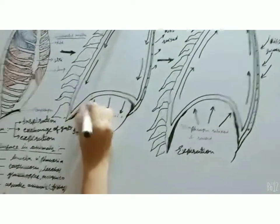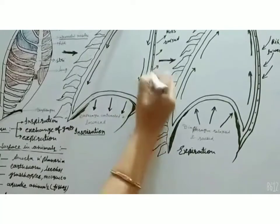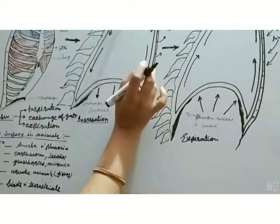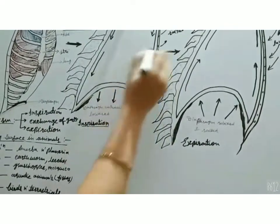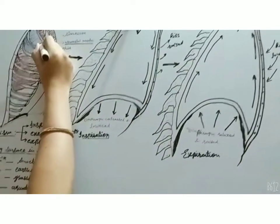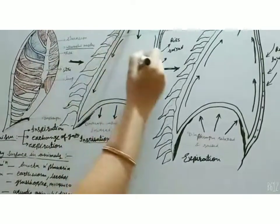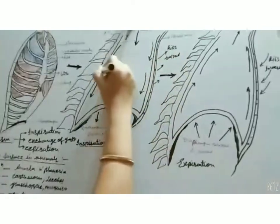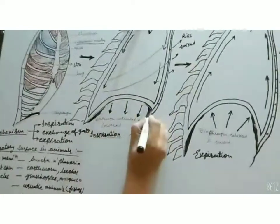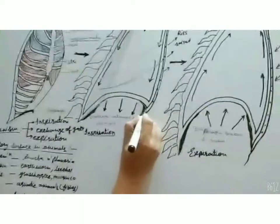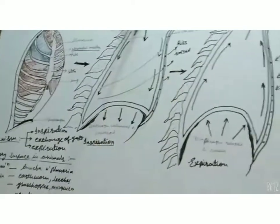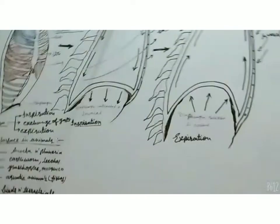The diaphragm is the flat structure below the rib cage, and these are the ribs. When inspiration — intake of oxygen — occurs, the intercostal muscles lift the rib cage, so the ribs are raised upward. At the same time, the diaphragm moves lower and becomes flattened, increasing the capacity of the lungs to fill with oxygen. This all takes place during inspiration.